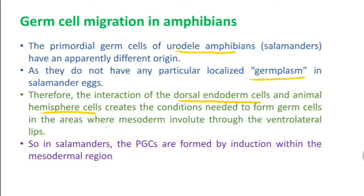In salamanders, the interaction of endodermal cells in the dorsal region with animal hemisphere cells creates the conditions needed to form germ cells in the area where mesoderm involutes through the ventrolateral lips. Therefore, in urodeles, PGCs are formed by induction within the mesodermal region, which is quite different from that of anurans.